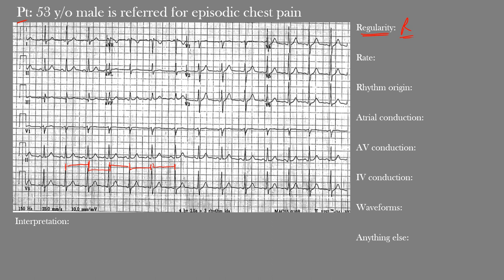The heart rate was 87 beats per minute. One way to calculate it: the EKG from beginning to end represents 10 seconds. Count the number of QRS complexes across and multiply by 6, since 10 seconds times 6 gives 60 seconds. Counting across gives us 14 complexes, and 14 times 6 equals 84 beats per minute — a close estimate to the actual 87.